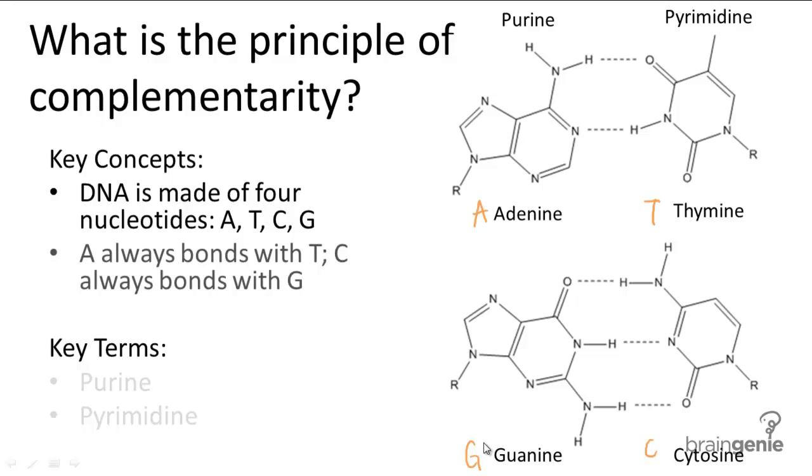The principle of complementarity states that adenine will only ever bond with thymine, guanine will only ever bind with cytosine, and vice versa. Cytosine to guanine, thymine to adenine, and that's because these molecules are built to complement each other.